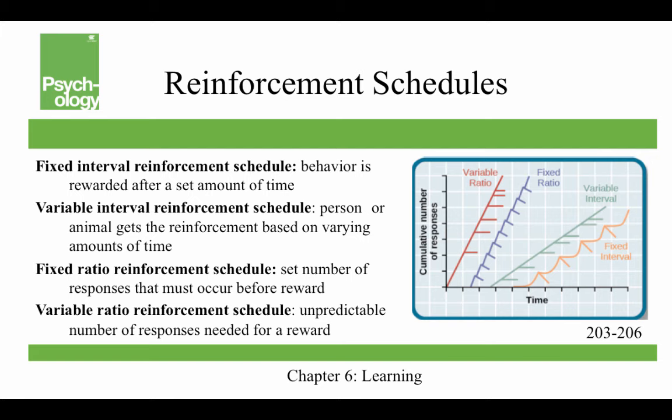A variable interval reinforcement schedule is when a person or animal gets reinforcement based on varying amounts of time. This could be something like checking Facebook, which can be very reinforcing — did somebody like my picture? You might check it five times in the morning, not at all during the day, and then once in the evening. So it's a variable interval.